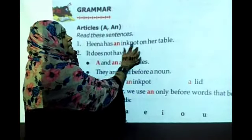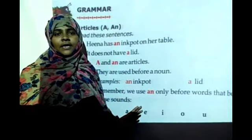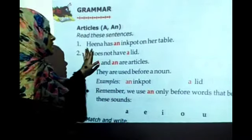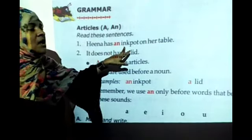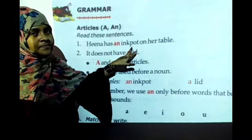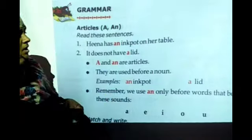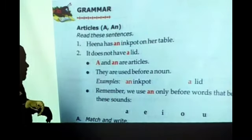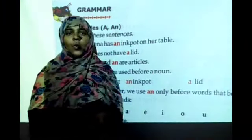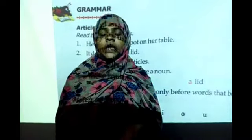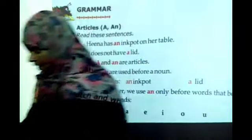Hina has an ink pot on her table. No need to read the total sentence — just look at the first alphabet of the word. A, E, I, O, U — we use An. Remaining all — we use A. Understood?